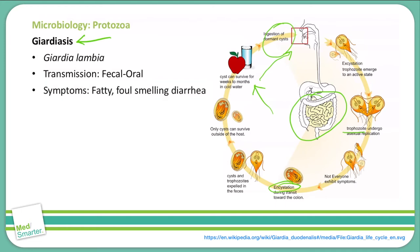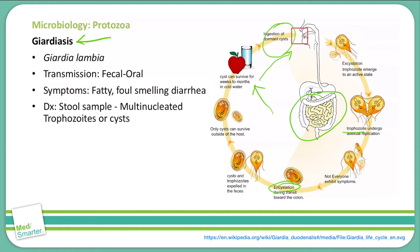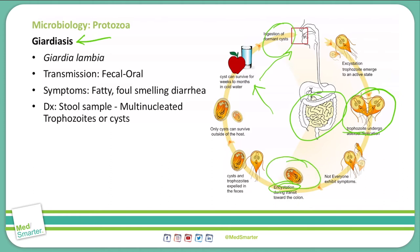Symptoms of a Giardia lamblia infection include fatty, foul-smelling diarrhea. To diagnose this, we take a stool sample, and you will see multinucleated trophozoites or cysts. As you can see over on the right, the trophozoites have multinucleated cells, and the cysts will have upwards of four nuclei.